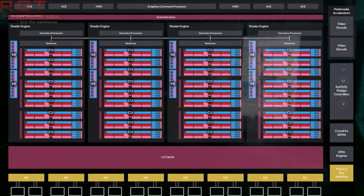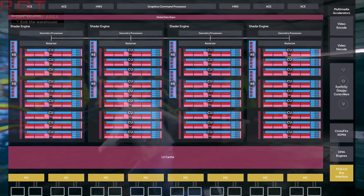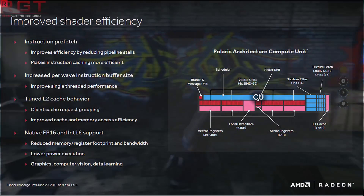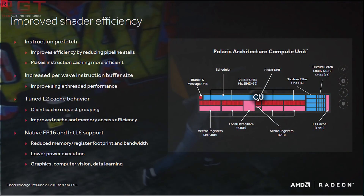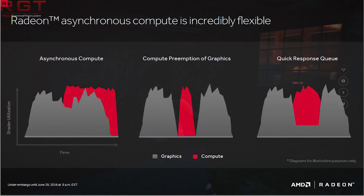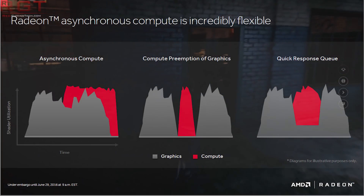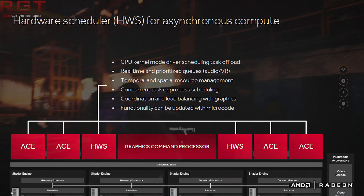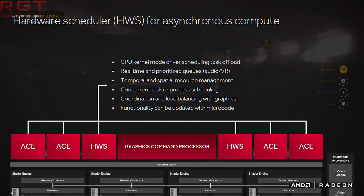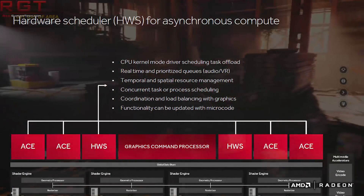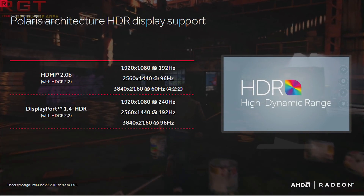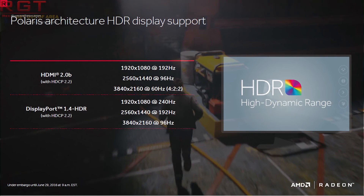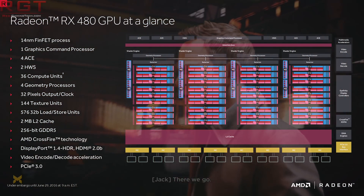The other idea of course is that it's Vega-based, which is always a possibility if it releases late. These are just theories. At the end of the day, we're not going to know what the card is — or if it even exists — until AMD decide to tell us.